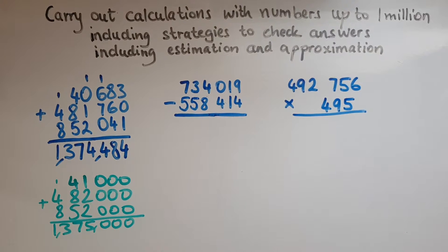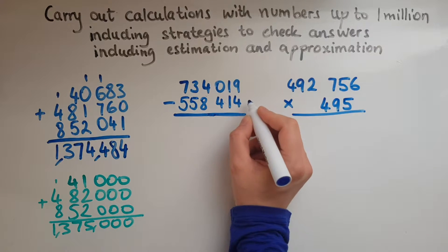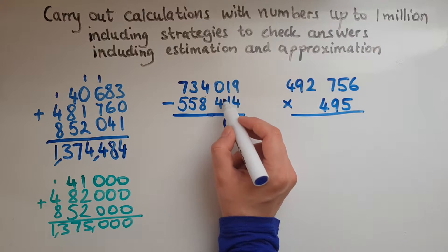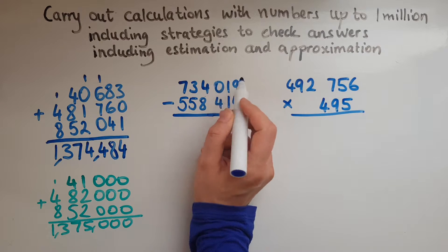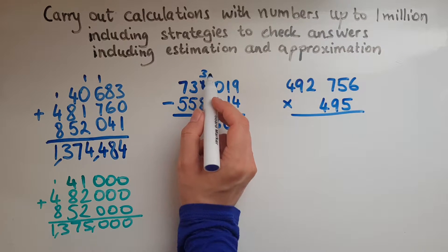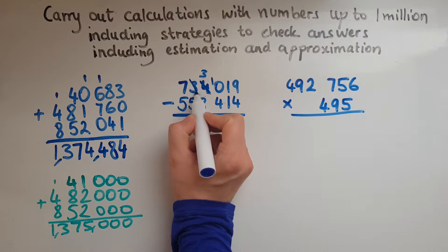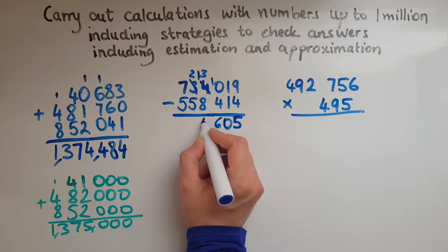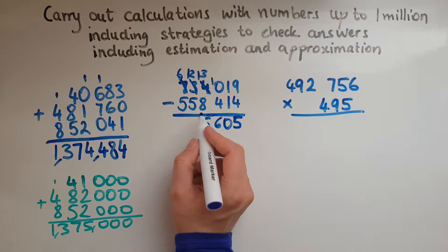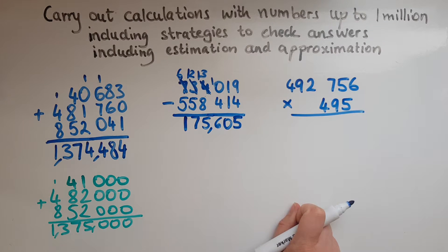Now moving on to subtraction. Again, line them up correctly — units under the units, tens under the tens, and so on. We start with the units. 9 take away 4 leaves us with 5. 1 take away 1 is 0. 0 take away 4 gives us a negative number, so we'd have to borrow 1 from the 4 to make it 3, and this becomes 10. 10 take away 4 is 6. 3 take away 8 gives us a negative number, so borrow 1 and this becomes 13. 13 take away 8 gives us 5. And 2 take away 5 gives 7. And 6 take away 5 gives us 1. So the answer is 175,605.